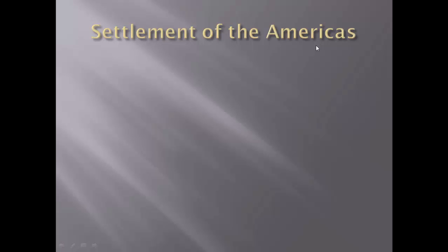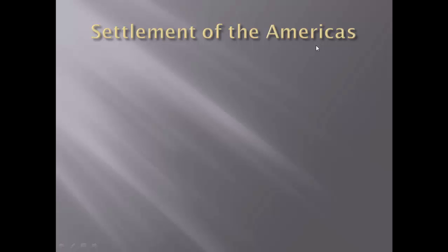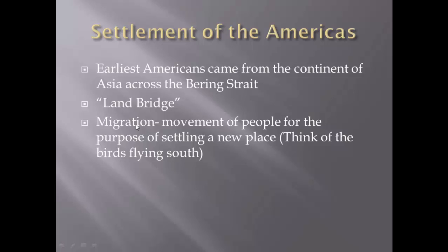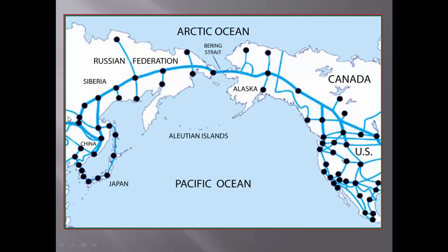The first thing we're going to look at is the settlement of the Americas — where did these Native Americans come from? The earliest Americans came from the continent of Asia across the Bering Strait. There was a land bridge, and they migrated down into the area. The term migration will be a theme that comes up in American history — it's the movement of people for the purpose of settling to a new place. Think of birds flying south; that's migration.